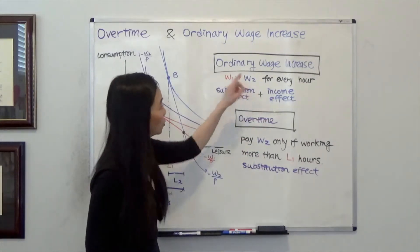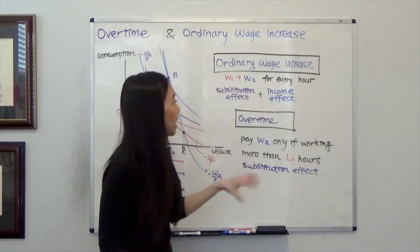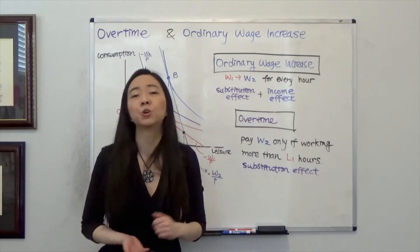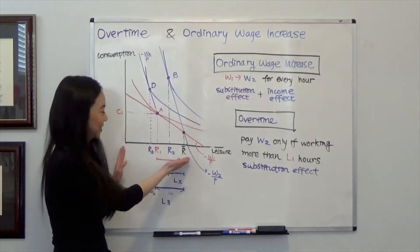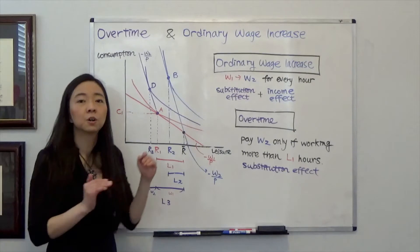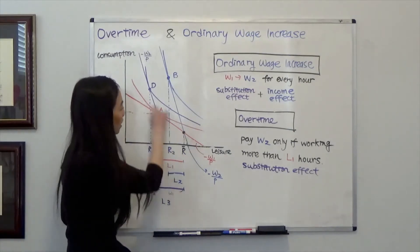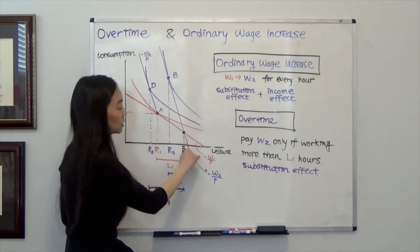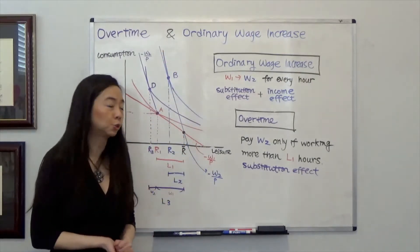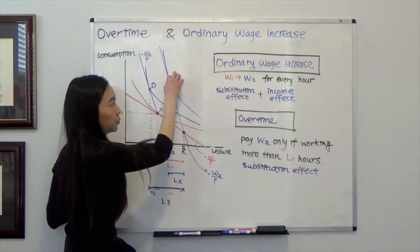Now, if your wage increase is so big, then your income effect is going to dominate, then you're going to end up working less. And that's exactly our case here. So suppose our wage goes up from W1 to W2. Then here, my budget line is going to become steeper.